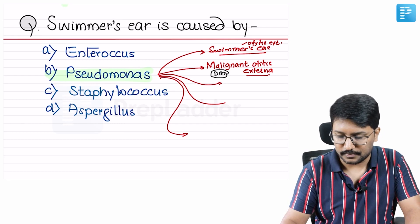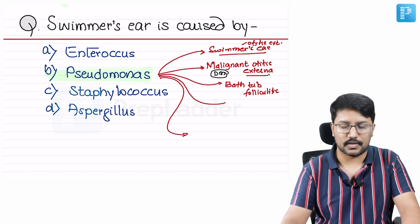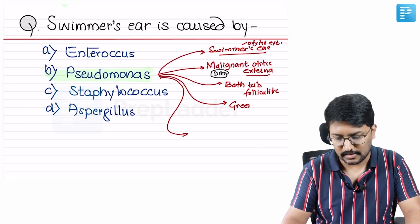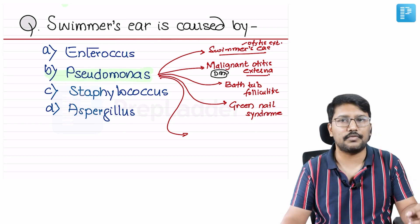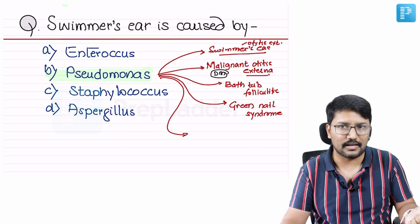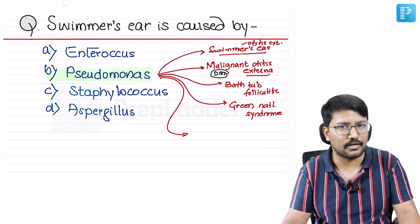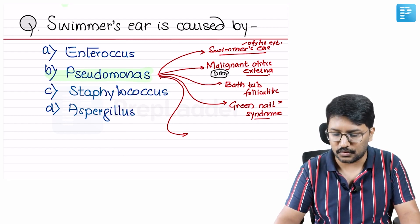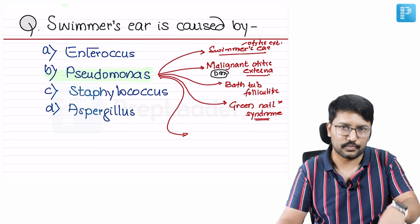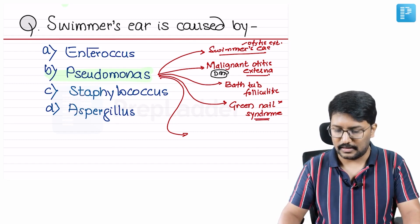Pseudomonas can also cause bathtub folliculitis. Then for image-based questions, remember green nail syndrome. Students often confuse this with blue toe syndrome, which is a form of gangrene or ischemia to the digit due to atherosclerotic occlusion of the blood vessel supplying the great toe. Green nail syndrome is due to Pseudomonas infection — it produces a pigment called pyocyanin that contributes to the green hue.